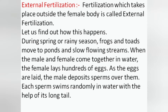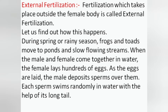During spring or rainy season, frogs and toads move to ponds and slow flowing streams. When the male and female come together in water, the female lays hundreds of eggs. As the eggs are laid, the male deposits sperms over them. Each sperm swims randomly in water with the help of its long tail and comes in contact with the eggs, resulting in fertilization.